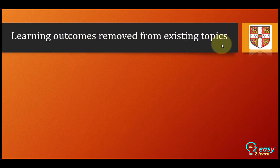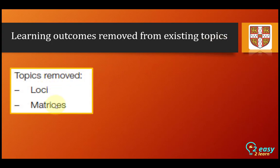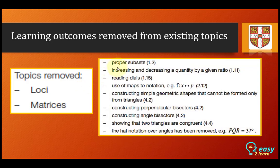Learning outcomes removed from existing topics: loci and matrices are removed — they are no longer part of the syllabus. Other removed items include proper set and proper subset, increasing and decreasing a quantity by a given ratio, reading dials, use of map notation, constructing simple geometric shapes that cannot be formed only from triangles, constructing perpendicular bisectors, constructing angle bisectors, showing that two triangles are congruent, and the hat notation for angles (e.g., angle PQR = 37°, where the hat on letter Q is no longer used).